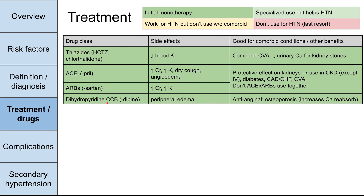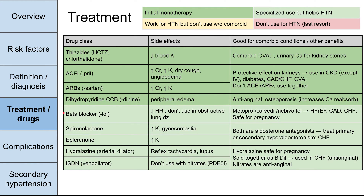Next are the dihydropyridine calcium channel blockers (CCBs) — drugs ending in '-dipine.' Side effects include peripheral edema. They are also anti-anginals, so they're good for people with angina or coronary artery disease. They also increase calcium resorption in the kidneys, so they could be beneficial for a patient with osteoporosis.